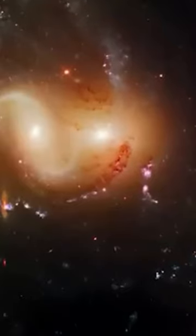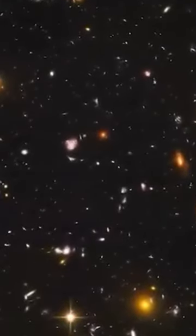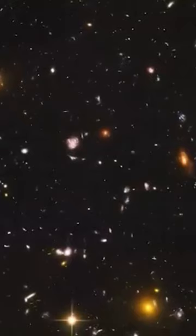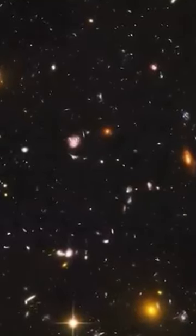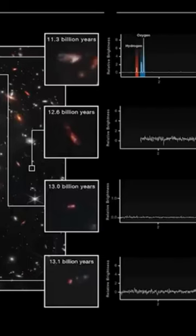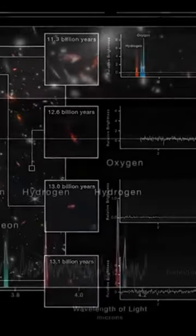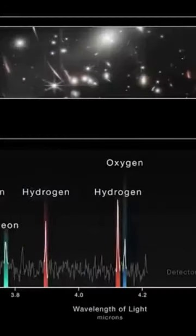Returning to the first James Webb image, SMACS 0723 is a compact cluster of galaxies located more than 4 billion light years from Earth. The photographed area is actually no larger than a grain of sand. Amazing, isn't it?